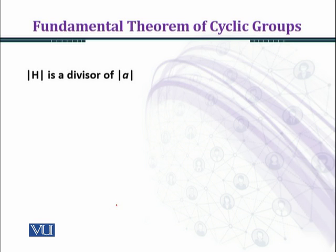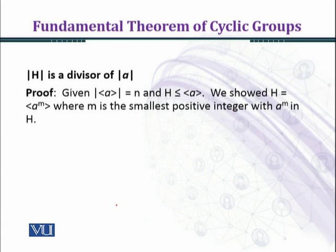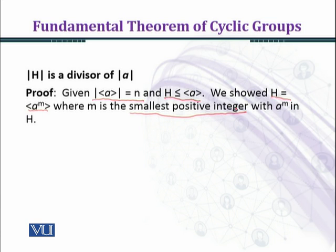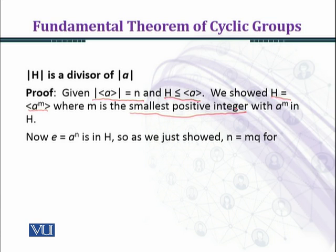Now we prove Part B: the order of h is a divisor of the order of a. We are given that the order of the cyclic group generated by a equals n, and h is a subgroup of the group generated by a. We show that h equals the group generated by a^m, where m is the smallest positive integer with a^m in h. Now we take a raised to the power n, which equals e, which belongs to h.